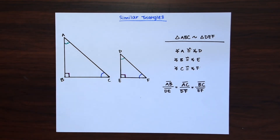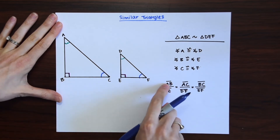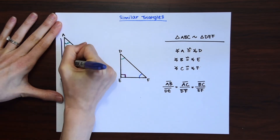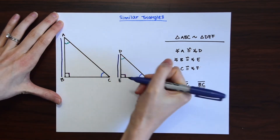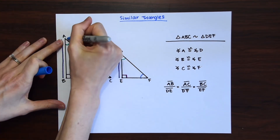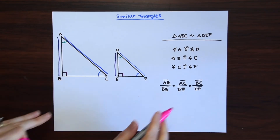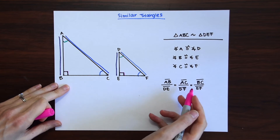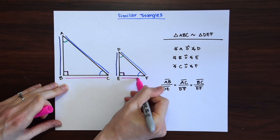Another main feature of similar triangles is that the sides are always in proportion to each other. Side AB corresponds to side DE in the other triangle. They're in proportion with this ratio. Side AC, the hypotenuse, lines up with the other hypotenuse DF. And our last part of the proportion: side BC corresponds to side EF.